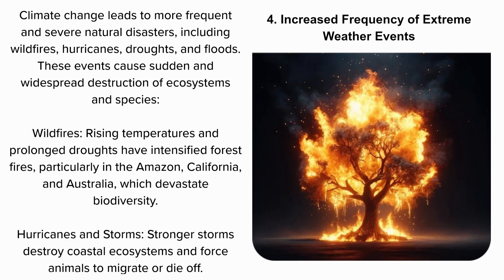Wildfires: rising temperatures and prolonged droughts have intensified forest fires, particularly in the Amazon, California, and Australia, which devastate biodiversity. Hurricanes and storms: stronger storms destroy coastal ecosystems and force animals to migrate or die off.